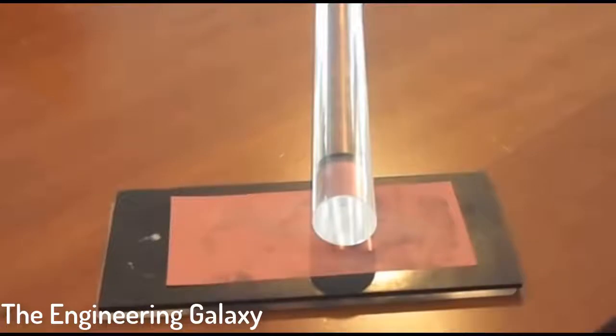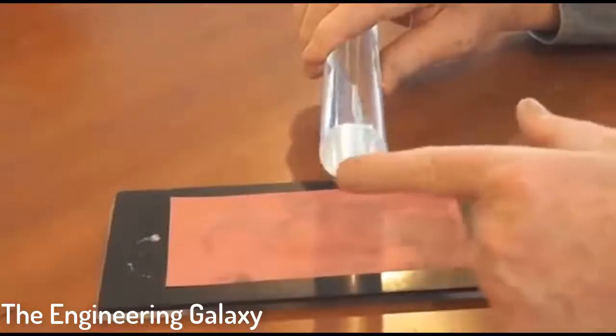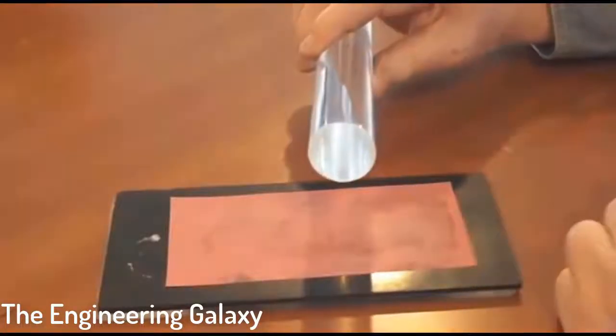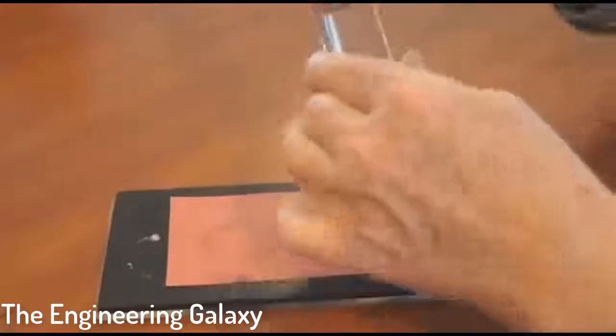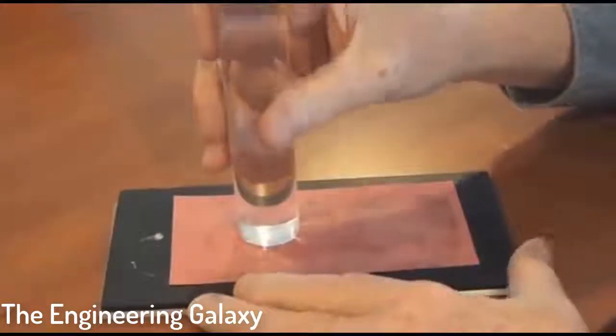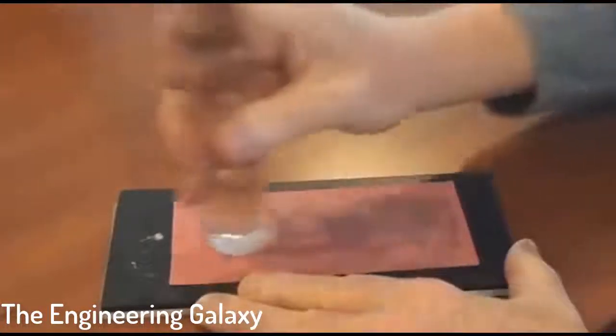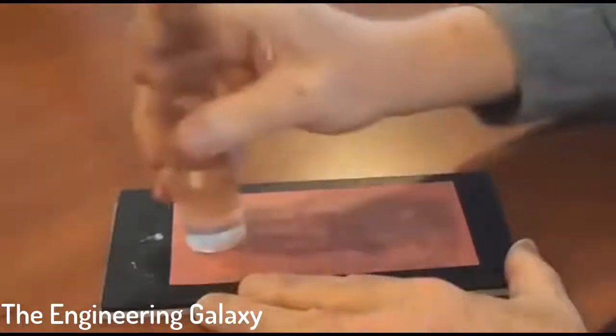To demonstrate how fiber works, we're going to use this 30 millimeter plastic rod. And to effectively get light in and out of it, we're going to polish the end. And we're polishing it just like we polish an optical connector, using the same film that we use for polishing connectors.